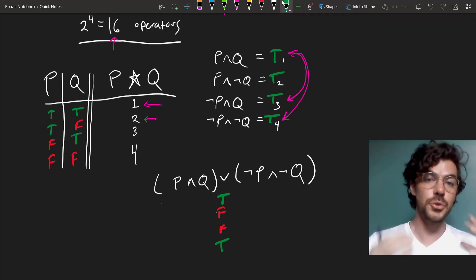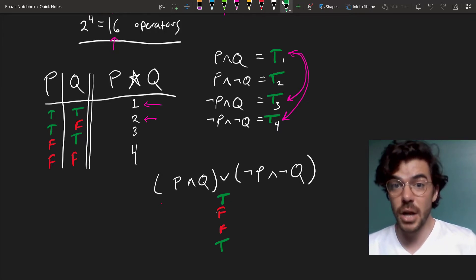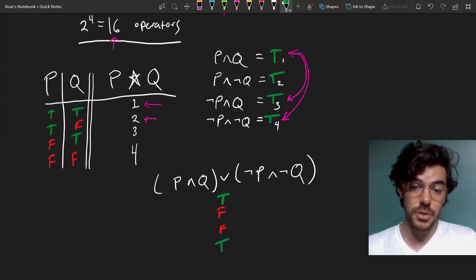Now, this doesn't get us every unary operator that we want, and it doesn't get us every n-ary operator that we want, but we can show that we can do this. Unary operators are easier, so let's just start there.